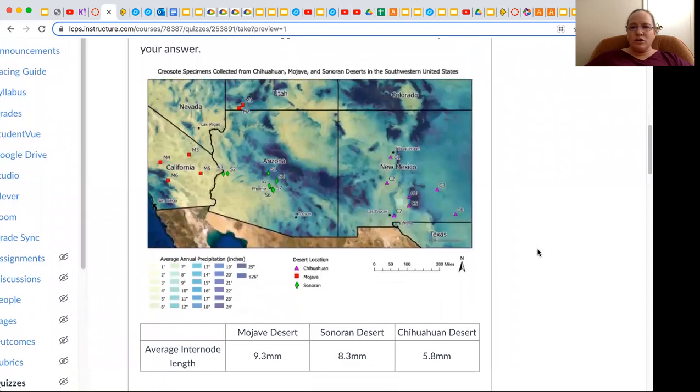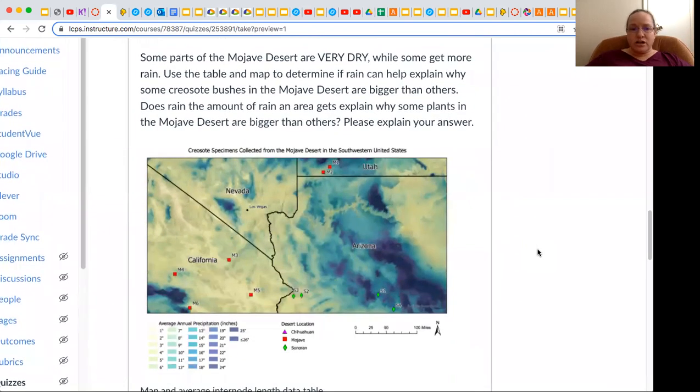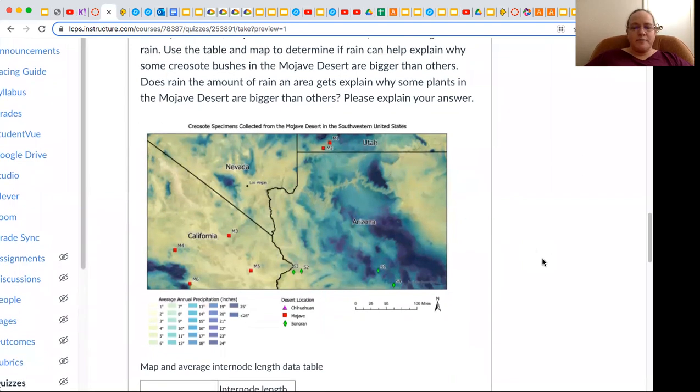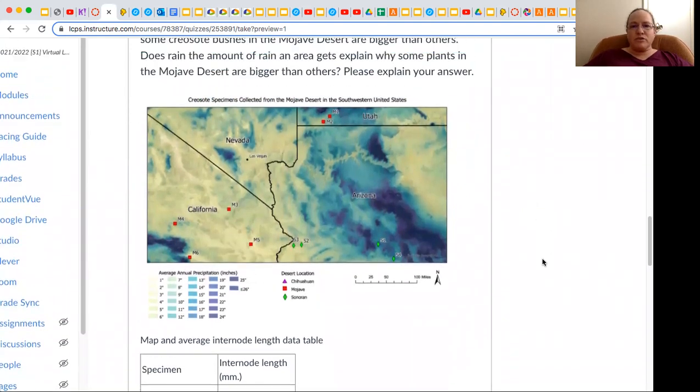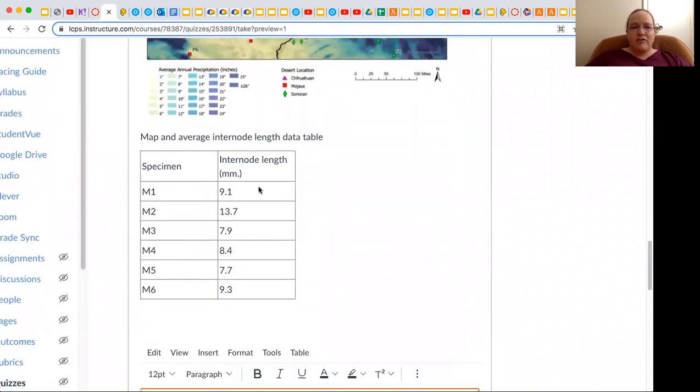However, when you look more specifically in a specific desert, in a certain desert, so we're to the Mojave desert, for instance, and looked at rainfall versus size, you can see that M1 and M2 that have more rain, they have larger plants than the other ones that were drier. So environment does play a role specifically, but in general, overall, the genetics does play a role.